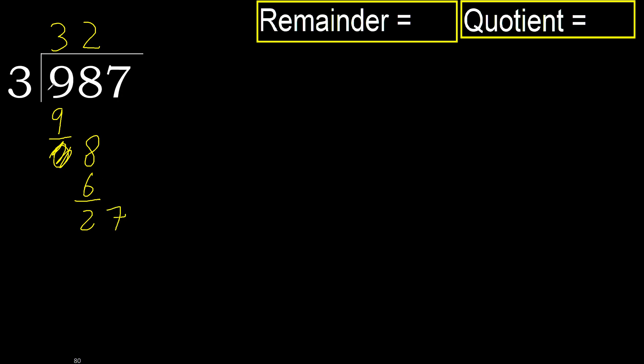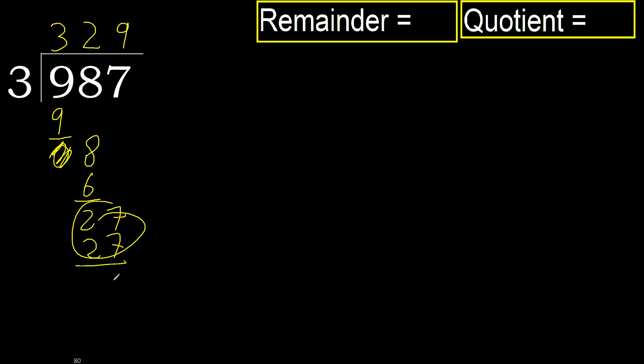27. 3 multiplied by 9 is 27. Is not greater. Subtract. Next.